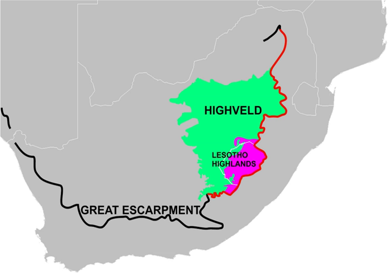The Highveld is home to a number of endangered animals, including straw-colored fruit bats, Africa's largest snake — the African rock python — mountain zebras, and South Africa's national bird, the blue crane (Anthropoides paradisea). The only endemic bird species is Botha's lark, and the two endemic mammals are the Free State pygmy mouse and the rough-haired golden mole.